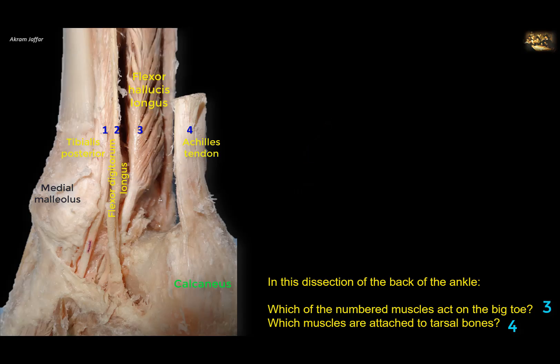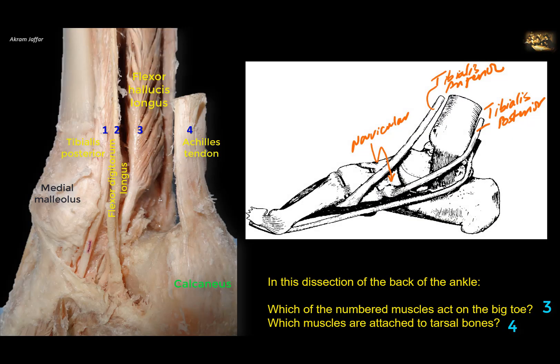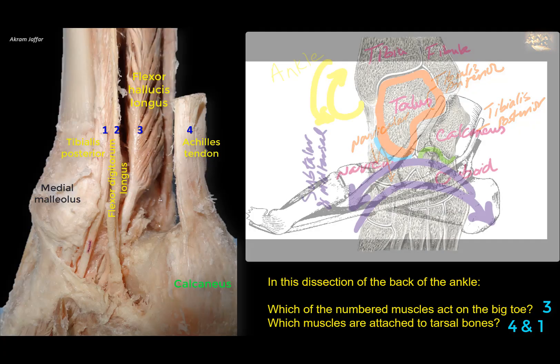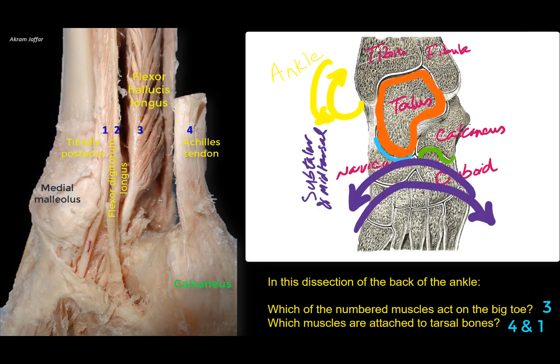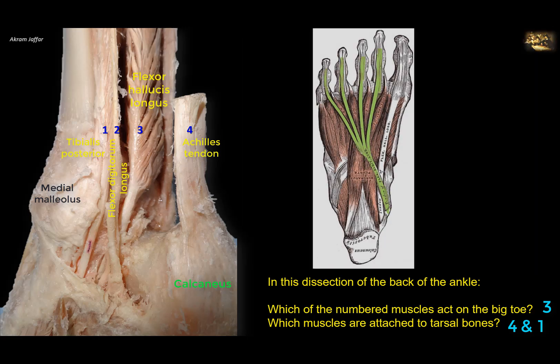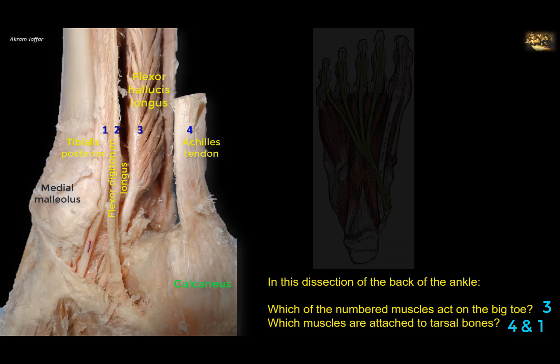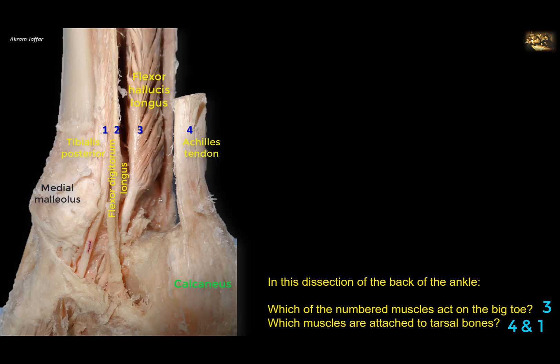Tibialis anterior doesn't act on the toes but acts on the tarsal bones — it's attached to the tuberosity of the navicular bone as well as the metatarsal, and it everts as well as plantar flexes the ankle joint. It everts the foot at the transverse tarsal joint because it's attached distal to that joint. Number two is not attached to a tarsal bone but to the digits, the phalanges. So three is attached to the big toe, and one and four are attached to the tarsal bones.